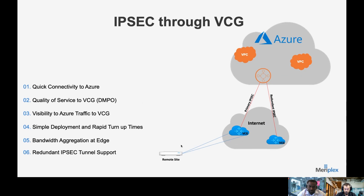The next option is an IPsec tunnel through the VeloCloud gateway. Like the first option, we can turn this up quickly. One key benefit is that we get DMPO and quality of service through the DMPO to the VeloCloud gateways themselves. From the VeloCloud gateways, we build the IPsec tunnels to Azure. Typically our VeloCloud gateways are located in the same data centers as Azure, so the IPsec tunnel is not traversing the long haul across the internet in most cases. We get visibility to Azure traffic at the gateway, can aggregate bandwidth from the remote site to the gateway, and can also configure primary and redundant tunnels for failover.